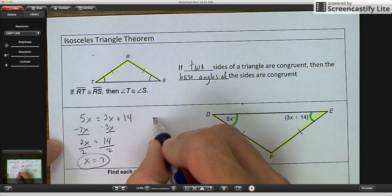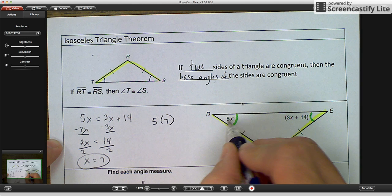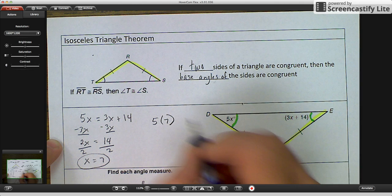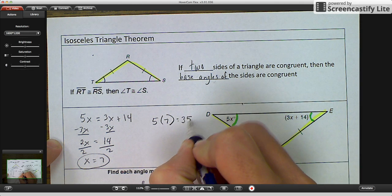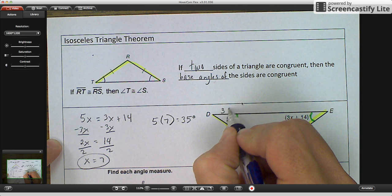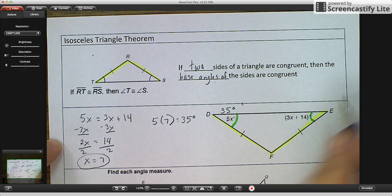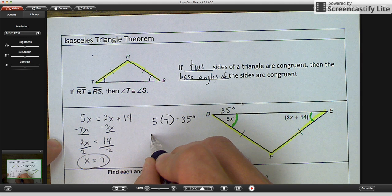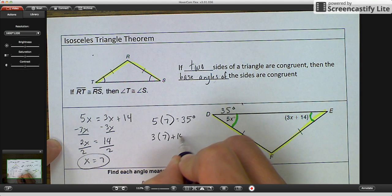So when we substitute it in, we go 5 times 7 because 5X means 5 times 7. And you get 35 degrees. So this base angle is 35 degrees. And since they're congruent, they should both equal 35 degrees.